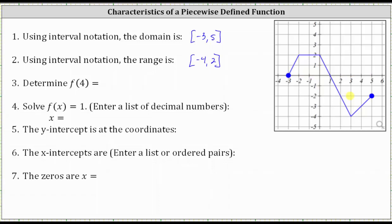Next, we're asked to determine f of four, where four is the input or x value. To determine the function value, we go to the x-axis and locate positive four, then go down to the graph and locate the point. Notice how the point where x equals positive four is the point four, comma negative three, where four is the x value and negative three is the y value or function value. F of four is equal to negative three.